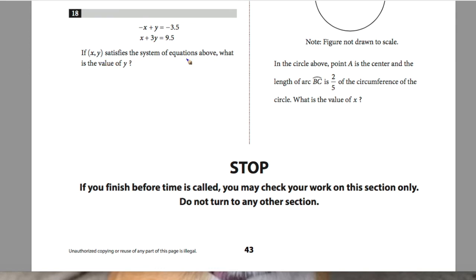Question 18 states, if (x,y) satisfies the system of equations above, what is the value of y? I want to eliminate x and solve for y. I don't want to attempt substitution because it will take too long. Here I have negative x plus y, but they sort of laid it out for you. Because if you want to eliminate x, the only thing you have to do is add the equations together. One is already negative x, one's positive x. Here's y and 3y. So I'm going to add these equations together. My minus x plus x, these will cancel. I get my 4y equals negative 3.5 plus 9.5, or 9.5 minus 3.5, and that would be 6. Dividing both sides by 4, my y would be 6 over 4, which gives me 3 over 2. So 3 over 2 is my answer for question 18.